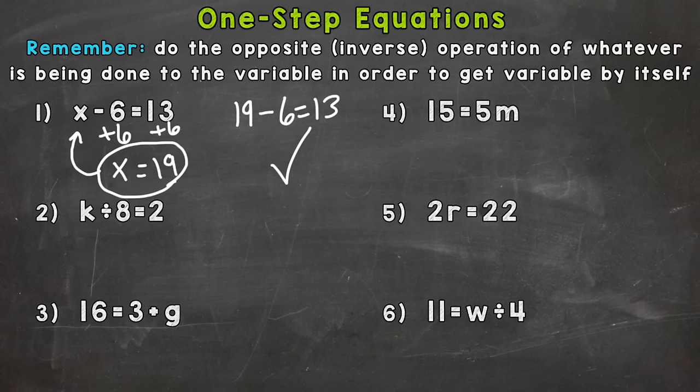We have k divided by 8 equals 2. So what are we doing to the variable k? Well, we're dividing by 8. So we need to do the opposite to that side to get rid of the dividing 8. So we need to multiply by 8. k divided by 8 times 8. Well, those 8s would equal 0 or cancel out. So k is by itself.